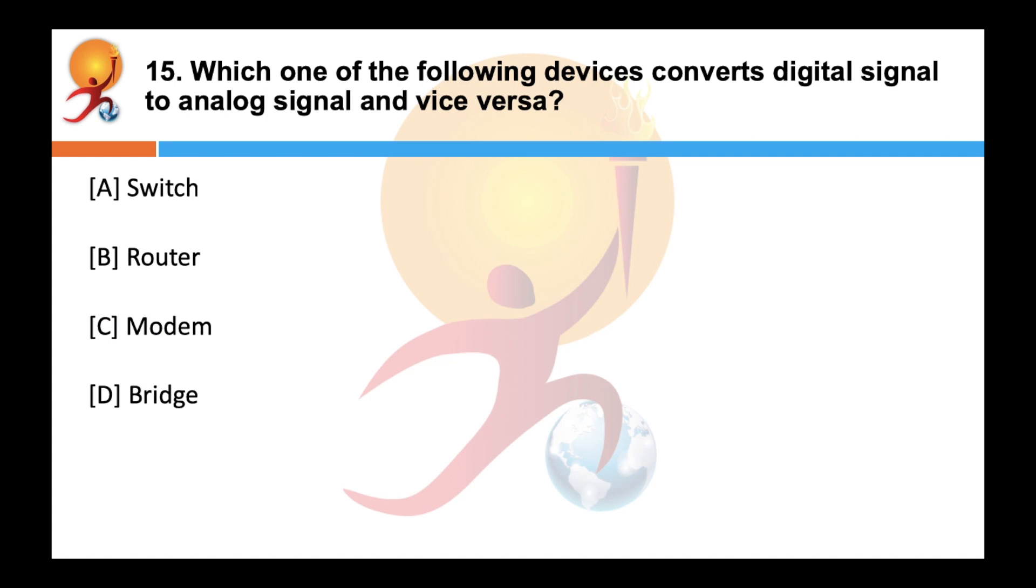Which one of the following devices converts digital signal to analog signal and vice versa? Correct answer is a modem. Modem is a device that converts digital signal to analog signal as a modulator and analog signal to digital signal as demodulator. Just an additional info, asynchronous modem uses start and stop bit for synchronization instead of a clock.